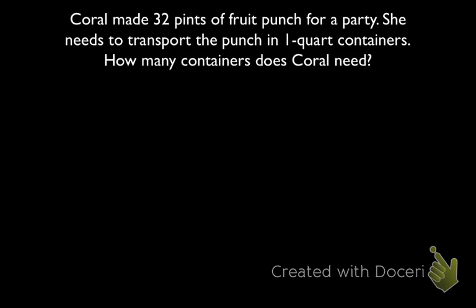Let's look at this problem. Coral made 32 pints of fruit punch for a party. She needs to transport the punch in 1-quart containers. How many containers does Coral need? Based on our table, we know that there are 2 pints to 1 quart.